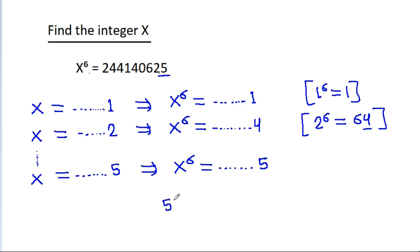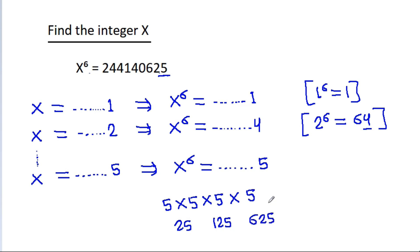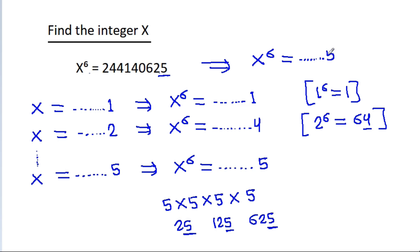Because 5 times 5 is 25, times 5 is 125, times 5 is 625 — so the last digit is always 5. That means x power 6 will be a number ending with 5.